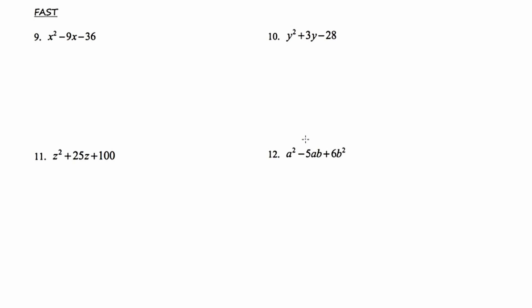In our next slide we're going to be talking about factoring using the FAST method. FAST is an acronym that I came up with, which stands for Factoring a Simple Trinomial. It's simple because the leading coefficient is positive one.